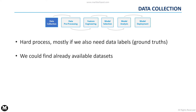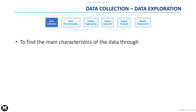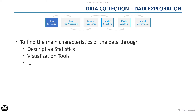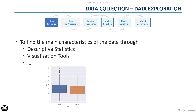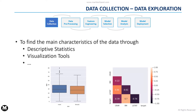Sometimes we are lucky, and we can find already collected datasets that are suitable for our problem. In any case, we can then explore our dataset through statistical analysis and visualization tools. The data exploration process is useful to understand the main characteristics of the available data, mainly thanks to descriptive statistics and visualization tools. For example, we can compute the mean value of an attribute or draw a box plot to find the outliers of another attribute. We can also compute the statistical correlation between each pair of attributes.